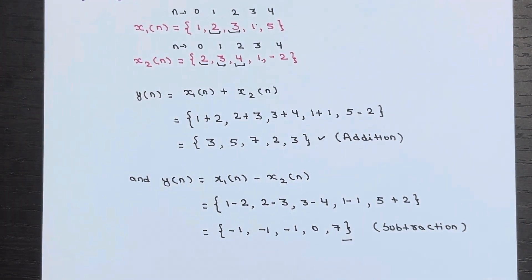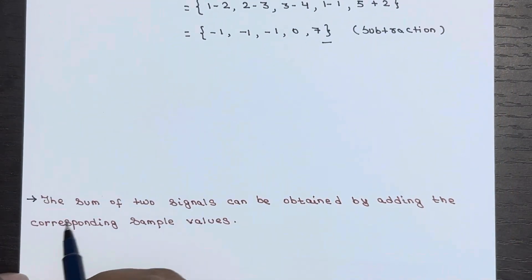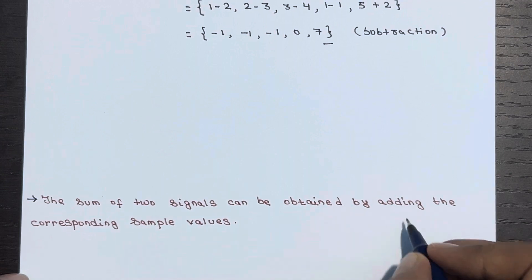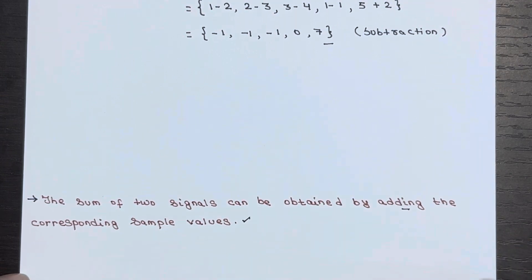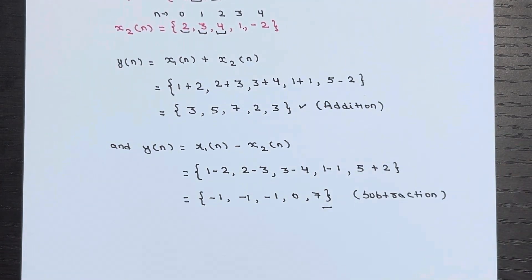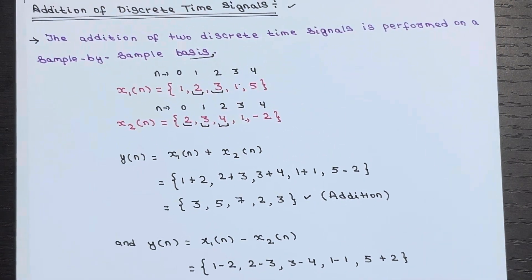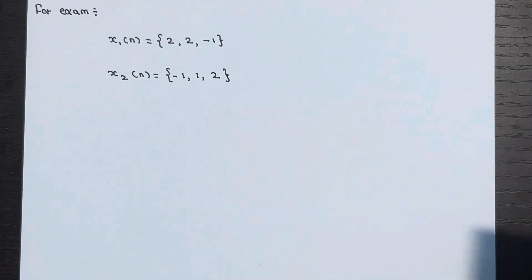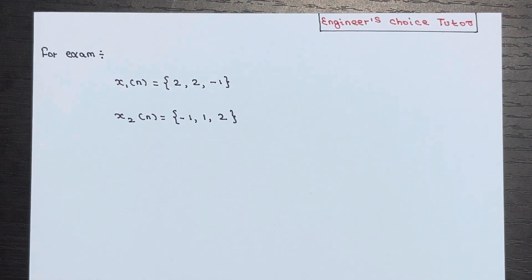Just go sample by sample, that's all. One key point: the sum of two signals can be obtained by adding the corresponding sample values. Now, for the exam, this shortcut method is fine, but it is better to go through a different approach when writing in an exam. Let me explain that approach.